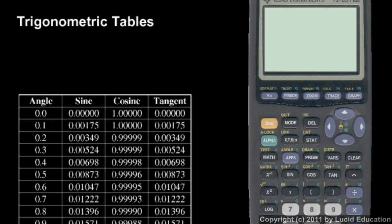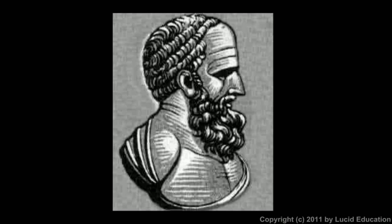And these trig tables originally had to be computed without a calculator. Remember Hipparchus? We talked about Hipparchus back at the beginning. There's a picture of Hipparchus, Greek mathematician from the 2nd century BC, over 2,000 years ago. As far as we know, he was the first person to compute and use tables of trigonometric values. And for that reason, Hipparchus is sometimes called the father of trigonometry.